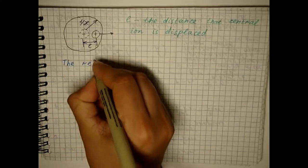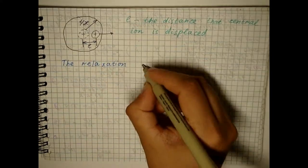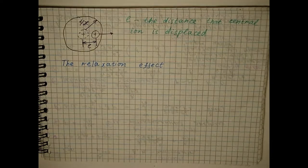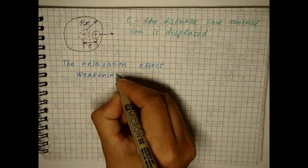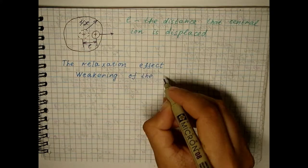The central ion is affected by electrostatic rotating force, which slows down its movement. The action of this force can be represented as a certain weakening of the external field.